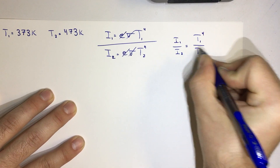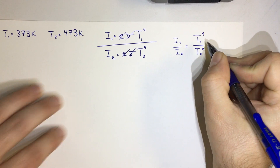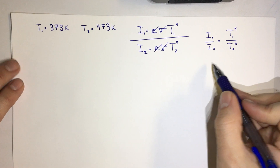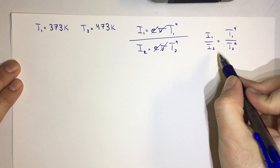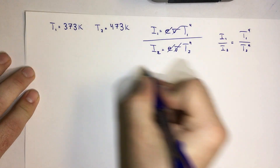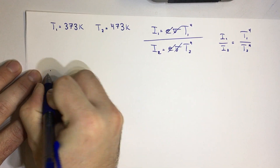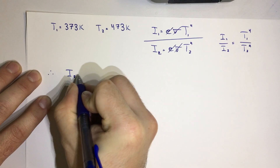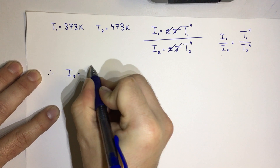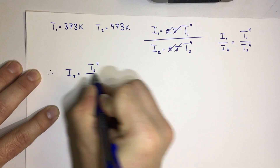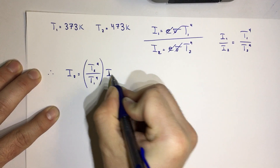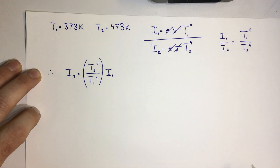We want to solve for i2 in terms of i1, so we invert this: i2 is going to be equal to T2 to the fourth divided by T1 to the fourth, multiplied by our initial intensity i1.